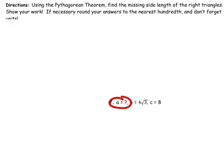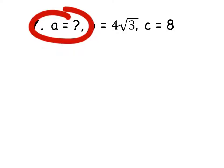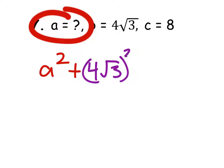A is going to be a leg, which means that we'll have A squared plus B, which is four times the square root of three, and we'll square it. This will equal our C squared, which is eight, eight squared.